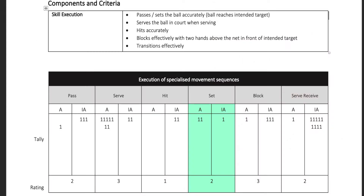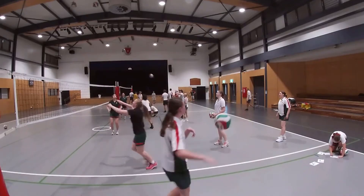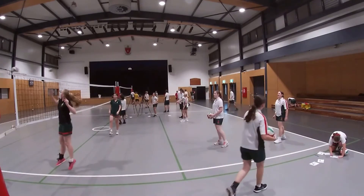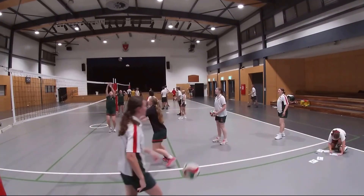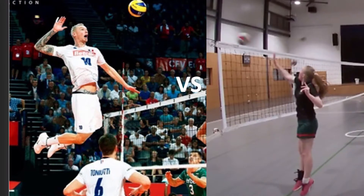Through an analysis of my volleyball performance, it is evident that the hit is my weak specialised movement sequence that is affecting my play. Because of biomechanical weaknesses, the effectiveness of my hit is not maximised. I will also analyse the functional anatomy related to the hit in volleyball, and subsequently my weaknesses.